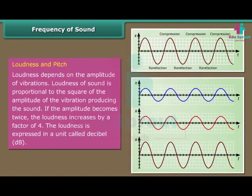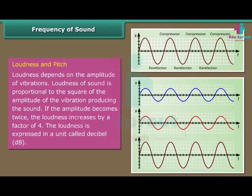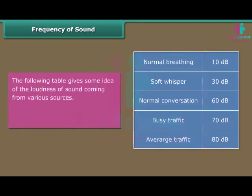Loudness and pitch: Loudness depends on the amplitude of vibrations. The loudness of sound is proportional to the square of the amplitude of the vibration producing the sound. If the amplitude becomes twice, the loudness increases by a factor of four. Loudness is expressed in a unit called decibel (dB). Above 80 dB, the noise becomes physically painful.